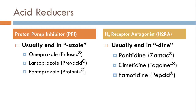Let's talk about acid reducers. There are two categories: PPIs (proton pump inhibitors) on the left, and H2RAs (histamine 2 receptor antagonists) on the right. PPIs end in '-azole.' The three most common are omeprazole, lansoprazole, and pantoprazole, with brand names Prilosec, Prevacid, and Protonix. Note the correct pronunciation: it's omeprazole, not 'omeprazole.'